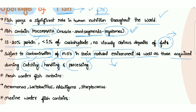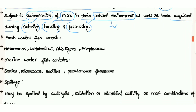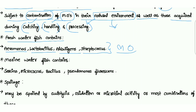Freshwater fish contains microorganisms such as Aeromonas, Lactobacillus, Alkaligenes, and Streptococcus in their bodies. These are the microflora of that fish — microorganisms which are inhabiting in that living organism, which here is the fish.